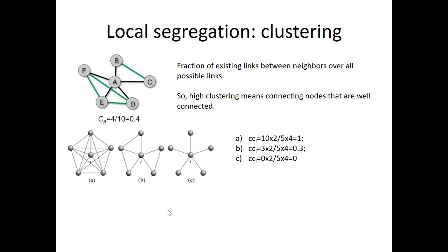When defining segregation, the first measure is clustering. Clustering means the fraction of existing links between a node's neighbors over all possible links between them. High clustering of a node means that this node connects other nodes which are well connected to each other. This is a local measure — we can define a clustering index for each node. In the example, the central node on the left has a high clustering coefficient, while on the right it has the lowest possible — zero — because its connected neighbors are not interconnected.